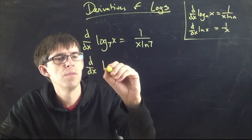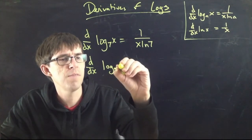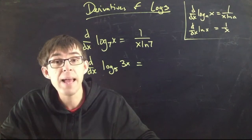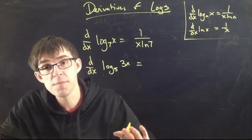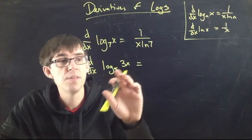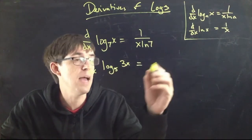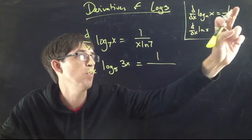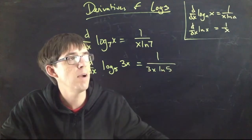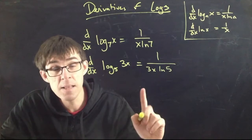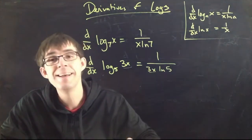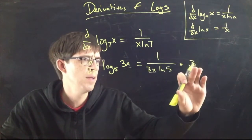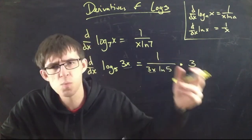How about the derivative of log base 5 of 3x? This time around we have some extra stuff on the inside, so we have to do the chain rule. The outside function is log base 5, and the inside is 3x. Take the derivative of the outer part: using the formula with a equal to 5, but with 3x instead of x, I get 1 over (3x ln 5). That was the derivative of the outside part. Then the chain rule says multiply by the derivative of the inside. The derivative of 3x is 3. You could simplify — the 3's cancel — giving 1 over (x ln 5).